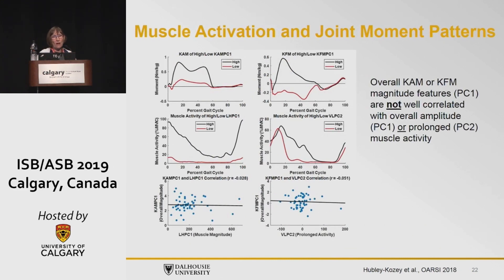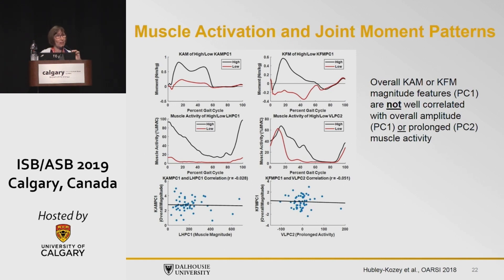Looking at muscle activation patterns in more detail: the top curves show the knee adduction moment on the left and the knee flexion moment on the right. The black curve is a high value for magnitude and the red curve is a low score for magnitude. Below we have the lateral hamstring. There is very little correlation between the magnitudes of the lateral hamstring muscle — and actually all muscles — and the overall magnitude of the moments. For the knee flexion moment, we also looked at prolonged activation: the black curve is indicative of prolonged activation and the red curve indicates no prolonged activation.